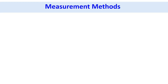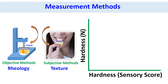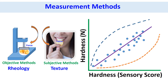Hardness of a potato chip could be measured by rheological and textural methods. In this slide, we can see that the relationship between objective and subjective methods could be linear or non-linear. However, in a complex scenario, any acceptable correlation may be difficult to achieve.